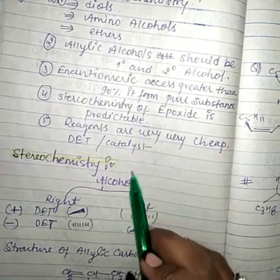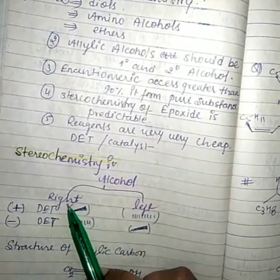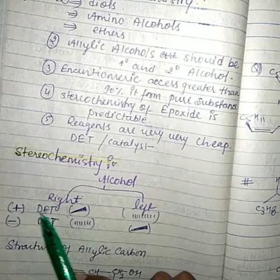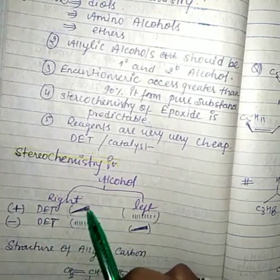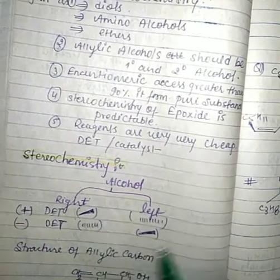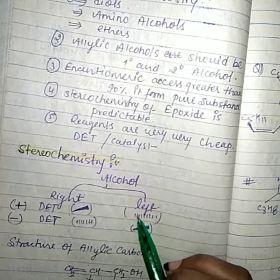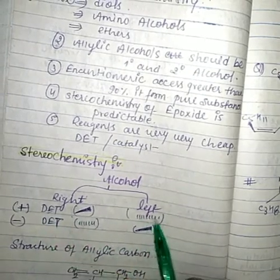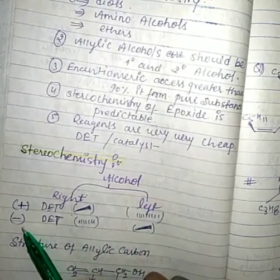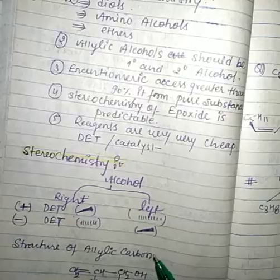We identify the stereochemistry with the help of the alcohol's position. If the alcohol is on the right side and DET is in the plus (+) form, we see the epoxide in the wedge (solid) form. When DET is in the minus (−) form, we see the dashed form. When the alcohol is on the left-hand side and DET is in the plus (+) form, we see the dashed epoxide; when DET is in the minus (−) form, we see the wedge epoxide.